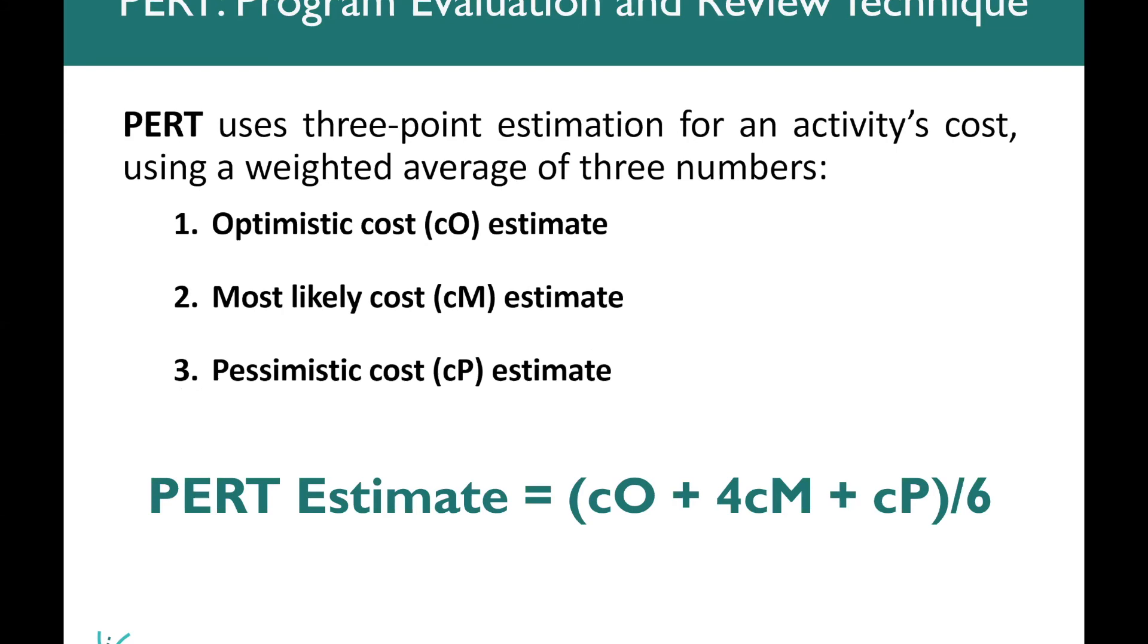You can also use PERT for cost. And it's a very similar formula here. You will see that you take your most optimistic cost and add that to your most likely cost, which is again weighted by 4. You add that to your most pessimistic cost. And then you divide that number by six. That's how you get your PERT three point estimate when you're using this on cost.